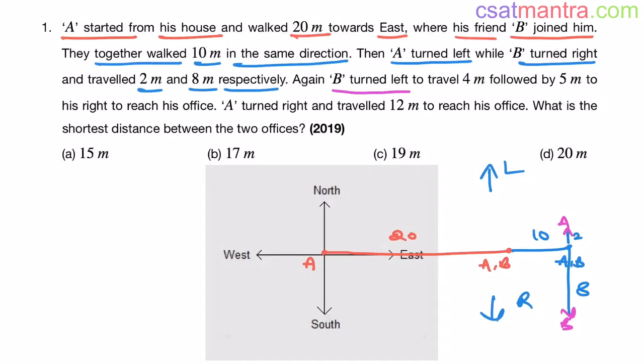Again, B turned left. Left to B is this direction. And traveled 4 meters. Followed by 5 meters to his right to reach his office. Now B is here. Right to B is this direction. So he walked 5 meters to reach his office. Let's say his office is here, 5 meters.